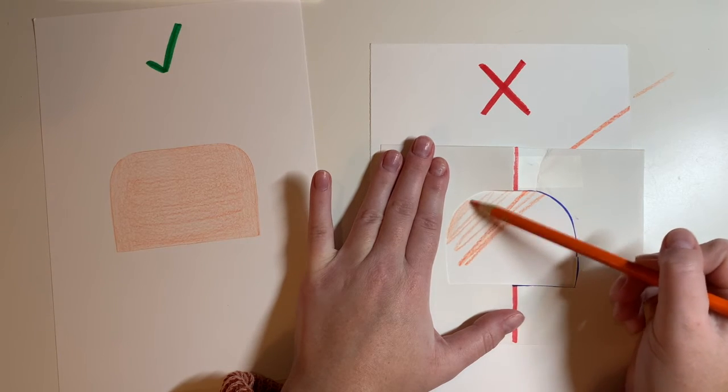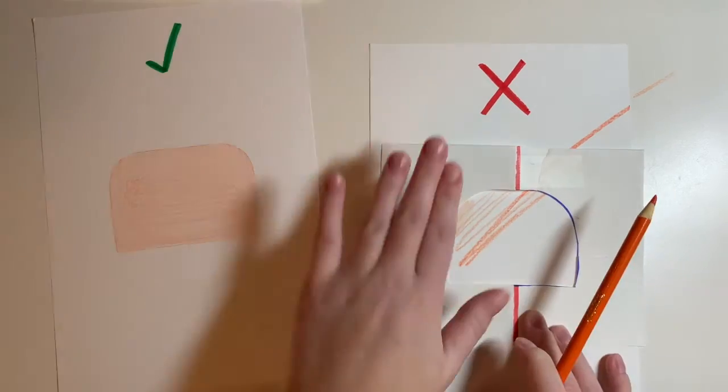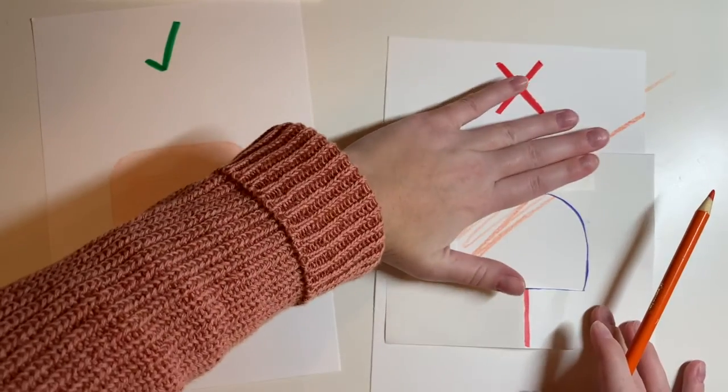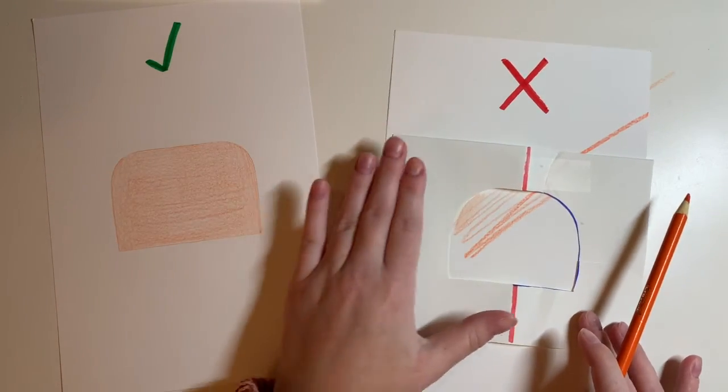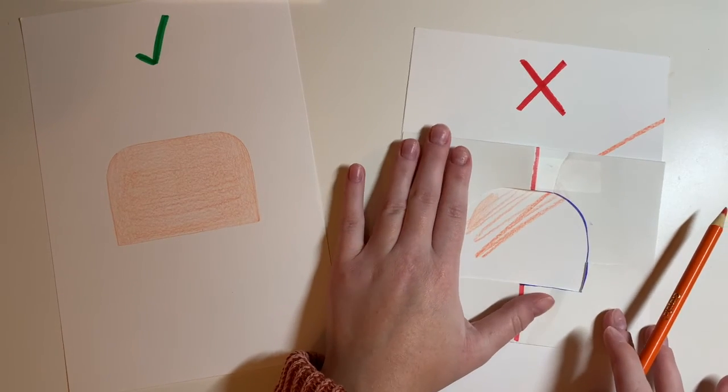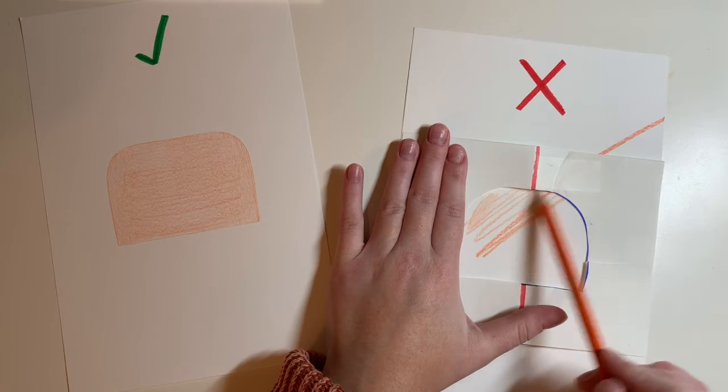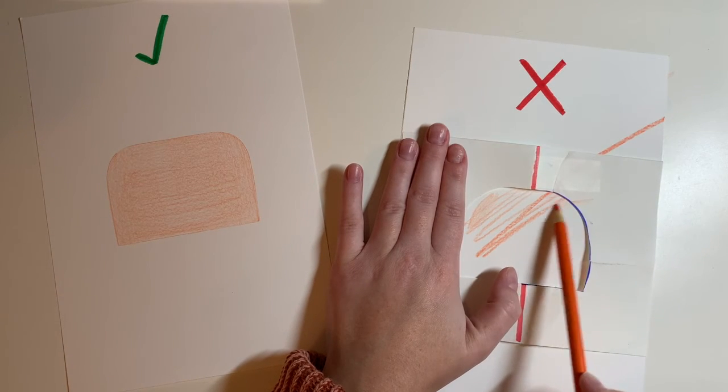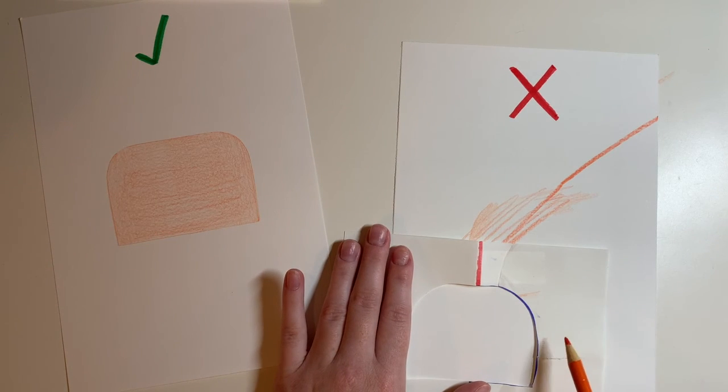Another thing you want to avoid is slipping your pencil under your paper. It's easy to do this if you're not holding down your paper as you work. For example, if I'm holding down my paper over here, but not over here, and I just go to color, my pencil might slip under and then it doesn't quite look right.